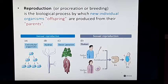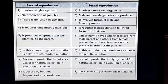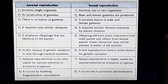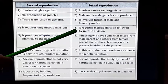Reproduction is broadly categorized into asexual reproduction and sexual reproduction. This table gives the differences between them. Asexual reproduction involves only a single organism, whereas sexual reproduction involves two organisms. In asexual reproduction, there is no production of gametes, whereas in sexual reproduction, male and female gametes are produced. Since there are no gametes in asexual reproduction, fusion does not take place. In sexual reproduction, fusion of male and female gametes takes place. In asexual reproduction, only mitotic division occurs, whereas in sexual reproduction, both meiotic and mitotic divisions occur.